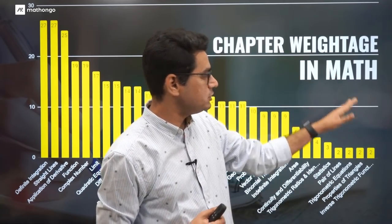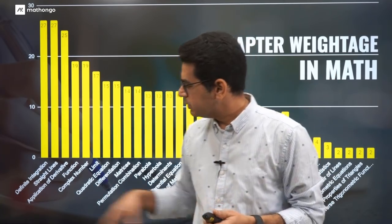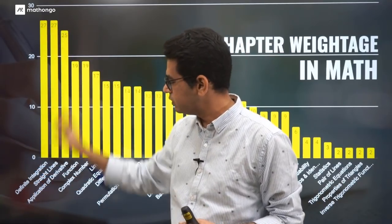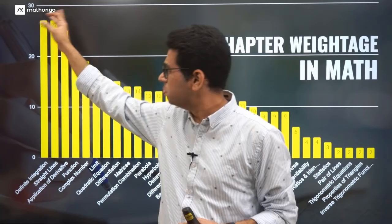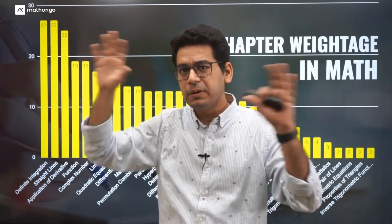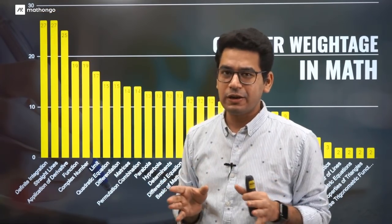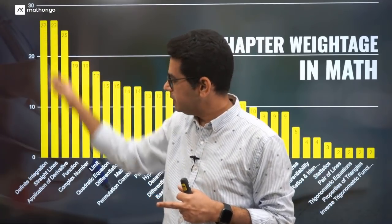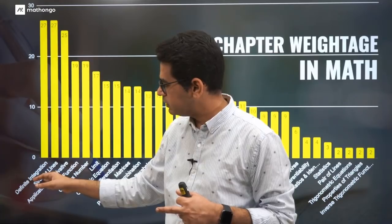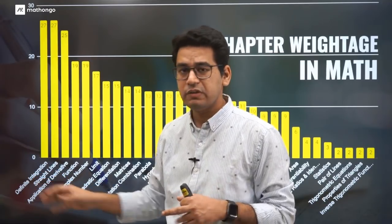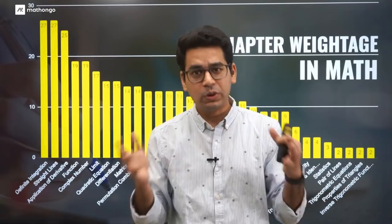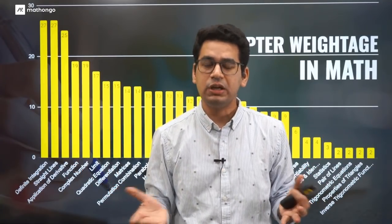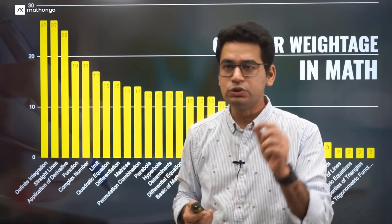This is chapter weightage in maths, that is the number of questions. In maths, the most important was definite integration with 27 questions. Straight lines, 27 questions. Application of derivatives, huge figures. If you see, these are very big chapters. We analyzed last five year papers. If you divide by five, that means five questions in definite integration, five in straight lines, five in application of derivatives. 15 questions in three chapters. You can imagine that if you are not doing these chapters properly, you are missing out on WBJE or any chance of qualifying into Jadavpur University.